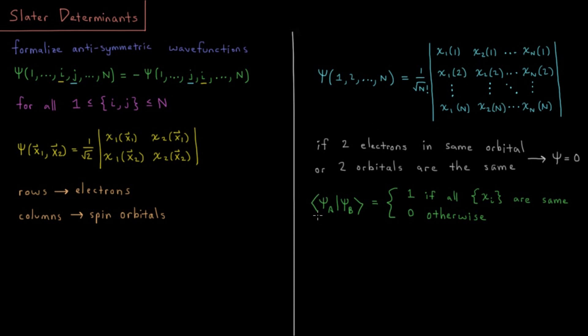This means that the overlap of two different electronic wave functions is going to end up being one if all of the orbitals are the same, and it's going to be one if the set of all orbitals in those determinants are the same.